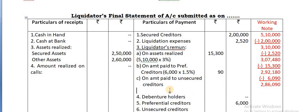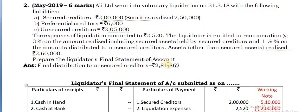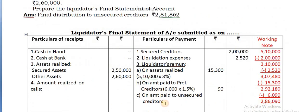Cash available is insufficient to pay the full claim. So how you calculate the commission? This amount into 1.5/101.5. The complete claim is 3,05,000 but cash available is less. Therefore you calculate like this: 2,86,090 into 1.5/101.5.